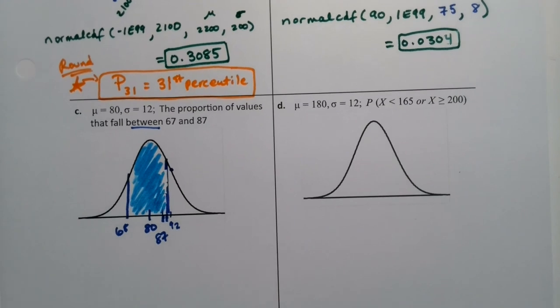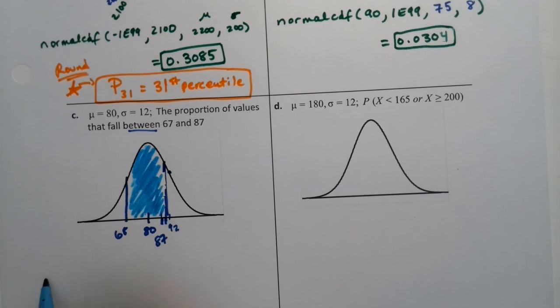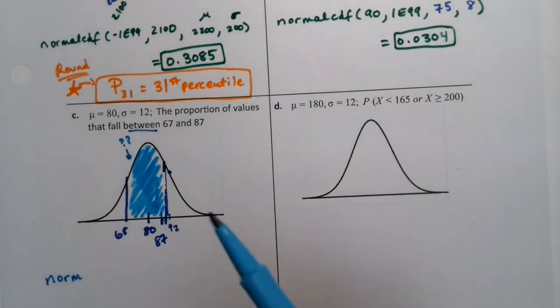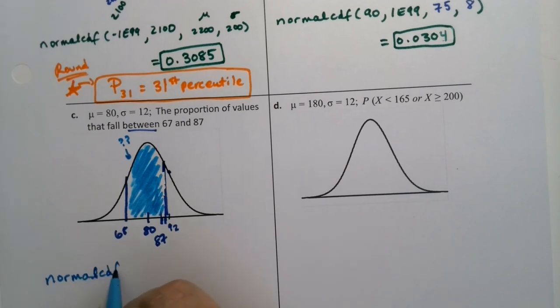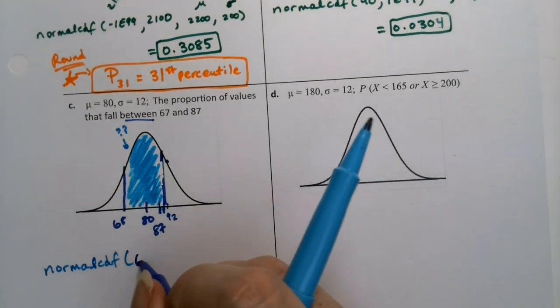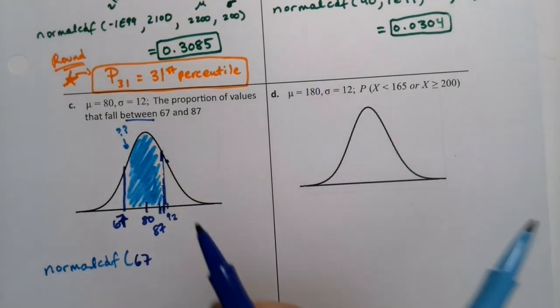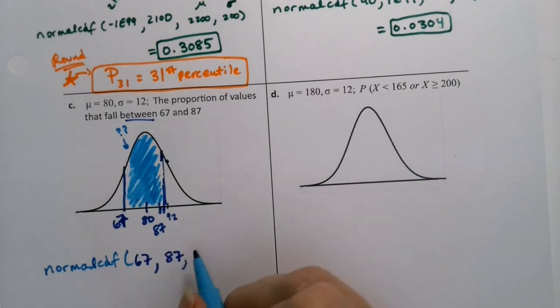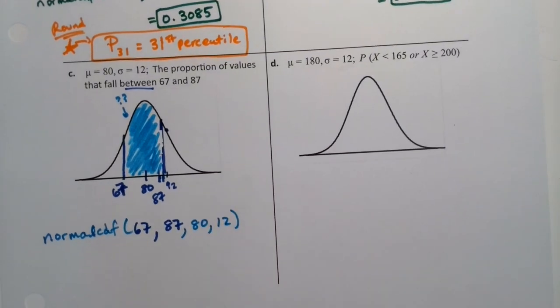So then area between. This should actually be really simple in the calculator. Because that area will be normal CDF. This is what we're looking for. The proportion is the area. Normal CDF. And all we want is lower, which is 67. Comma upper, which is 87. And then the mean, which is 80. And the standard deviation, which is 12.